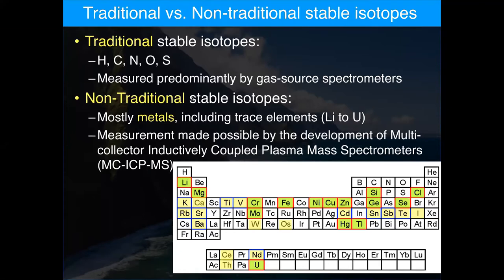Measurements of those metals used to be invisible because as the mass of the element increases, the variation in isotope ratio decreases and becomes very difficult to measure precisely — until the development of this amazing instrument called the multiple collector inductively coupled plasma mass spectrometer, or MC ICP-MS. Here are some of the most frequently measured non-traditional stable isotopes: alkaline metals, alkaline earth metals, transition metals, metalloids, electrolytes, and actinides. All can be measured on the MC ICP-MS.